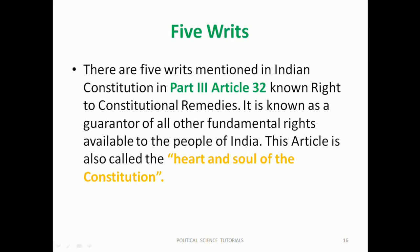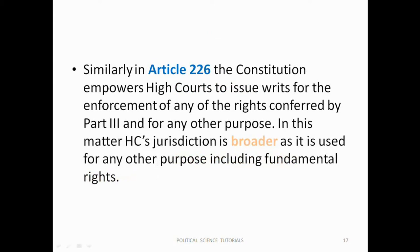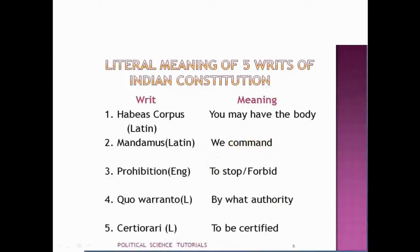For this reason, Article 32 is also called the heart and soul of the Constitution. Like Article 32, Article 226 empowers High Courts to issue writs for the enforcement of rights conferred by Part 3 and for any other purpose. Article 32 is for the Supreme Court and Article 226 is for High Courts. In this matter, the High Court's jurisdiction is broader as it covers any other purpose including fundamental rights, while the Supreme Court has jurisdiction only over fundamental rights.